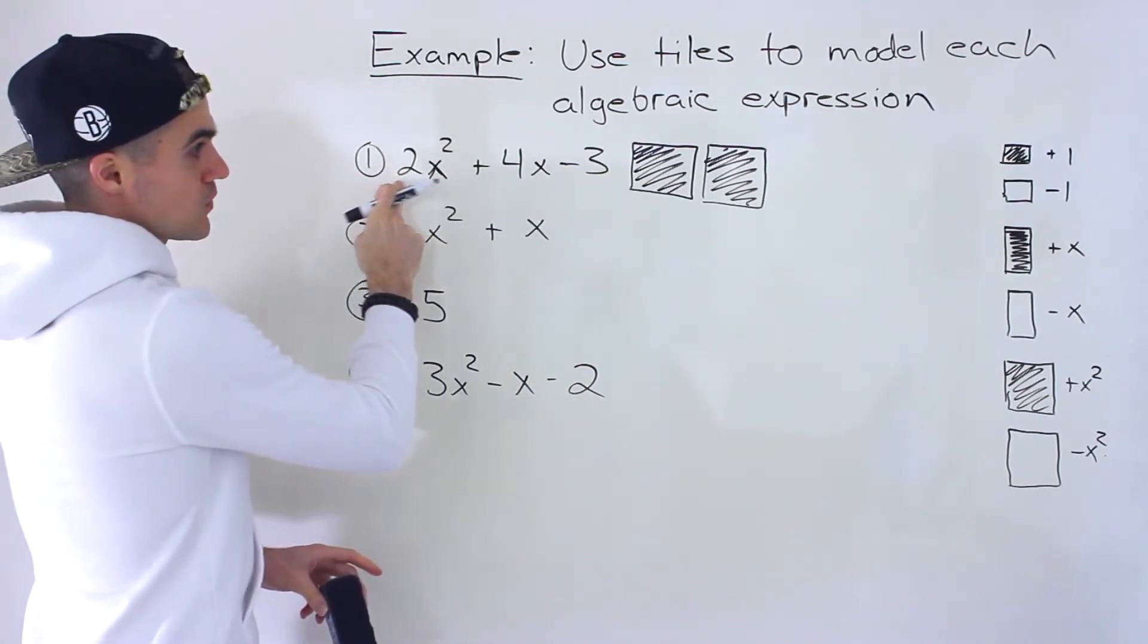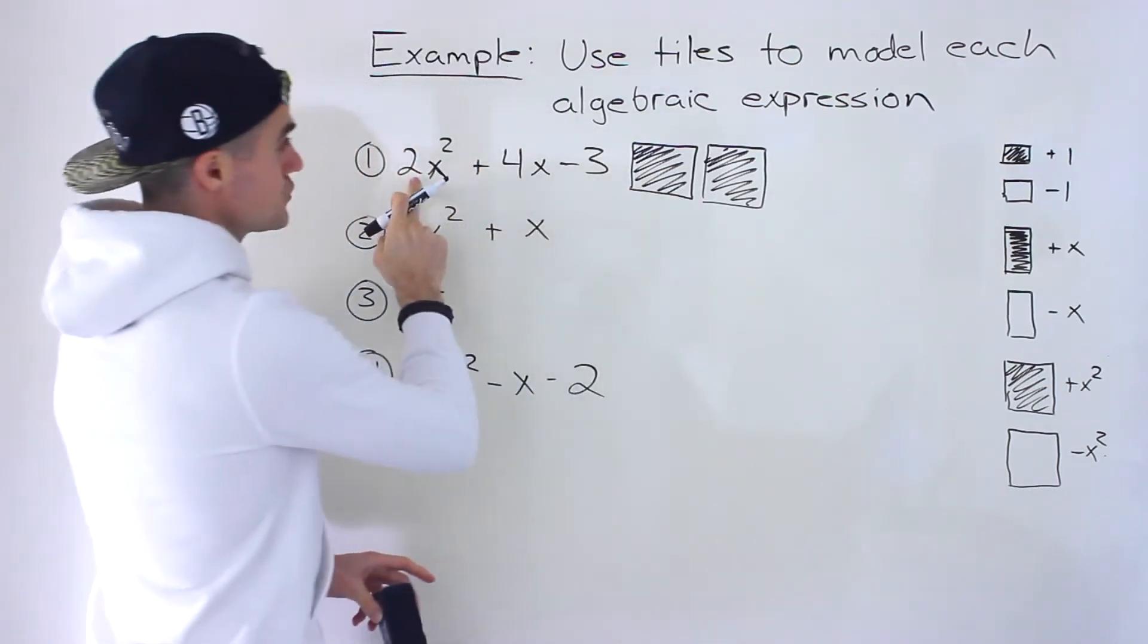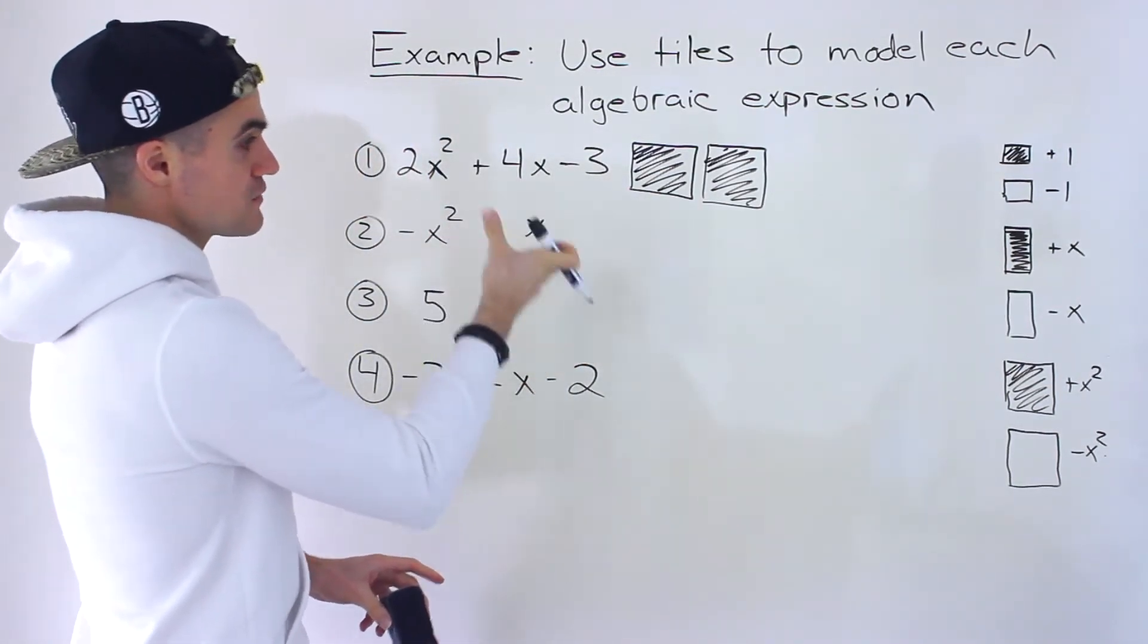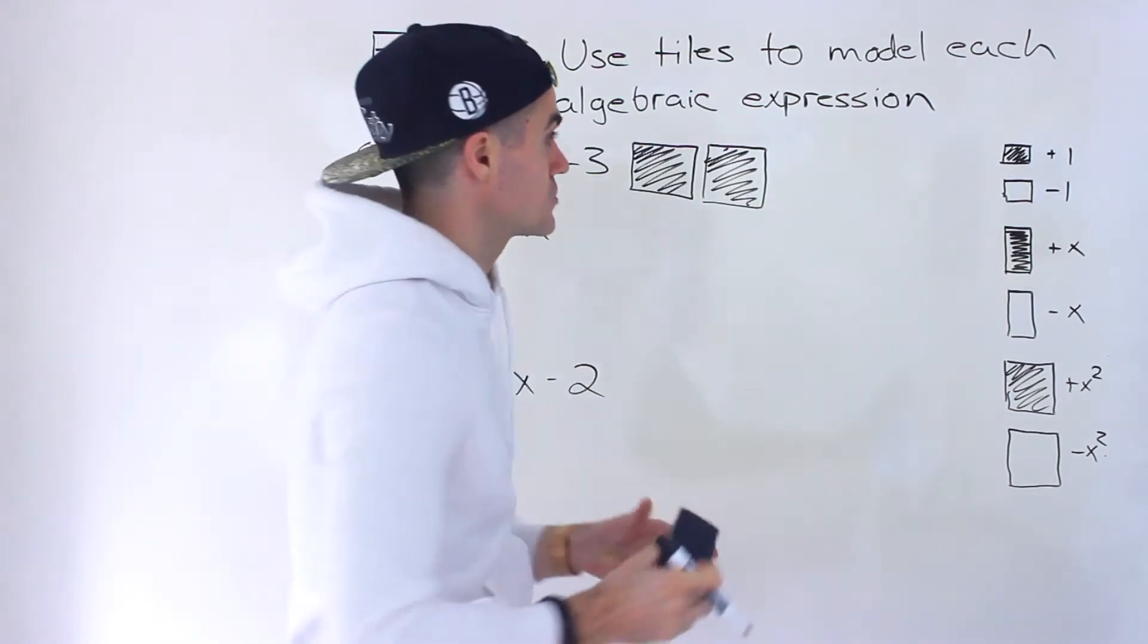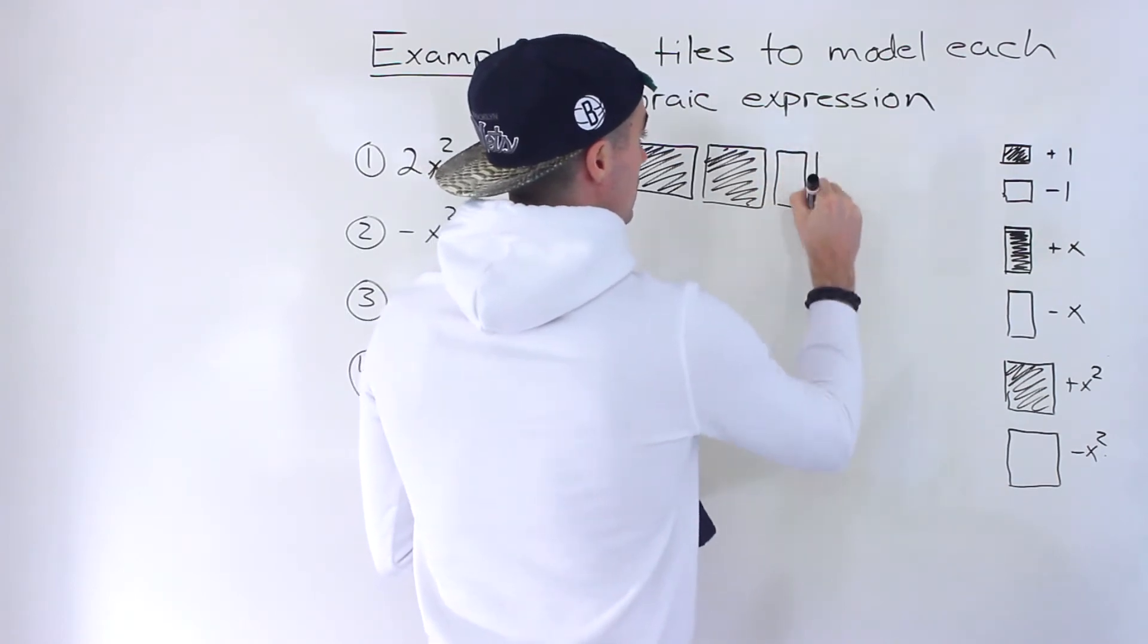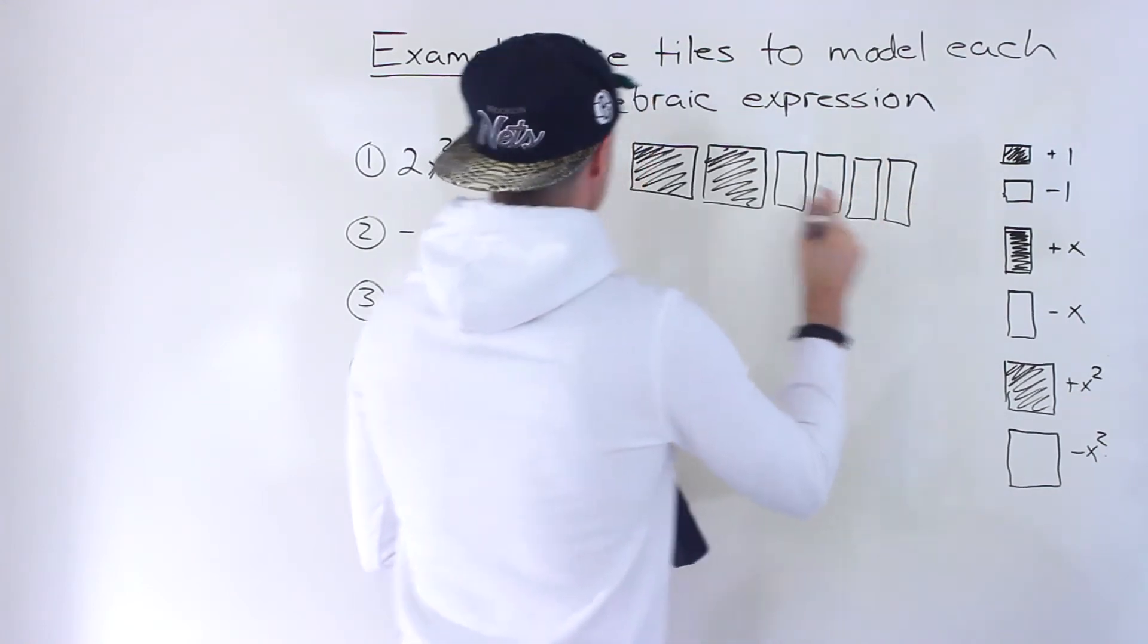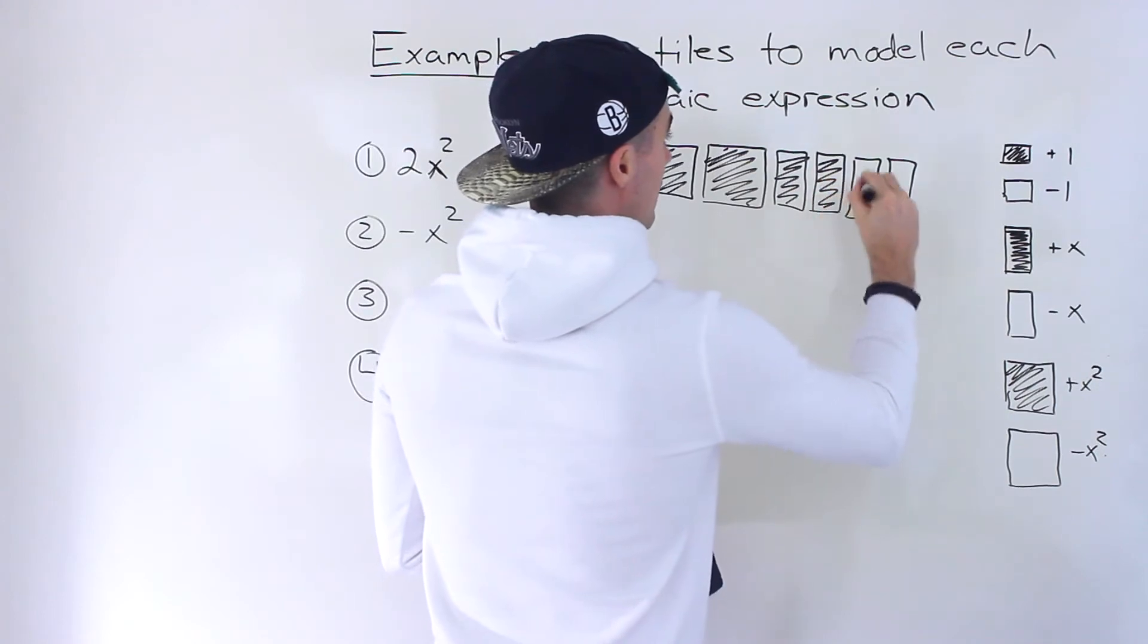If this was minus 2x squared, then we would draw 2 hollow squares. But it's positive 2x squared. And then we have plus 4x, so positive 4x. That means that there are 4 of these rectangles over here. So we would draw these: 1, 2, 3, and then 4. And because it's positive, these have to be filled in like that.